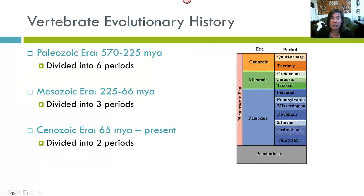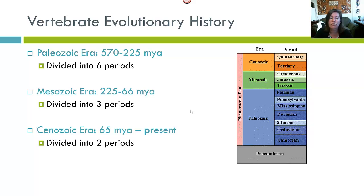Following the Precambrian Era, we have the Paleozoic Era, the Mesozoic Era, and the Cenozoic Era. These three eras constitute vertebrate evolutionary history, because the vertebrates evolved during this time period. The Paleozoic Era is from 570 million years ago to 225 million years ago, and it's divided into six periods.